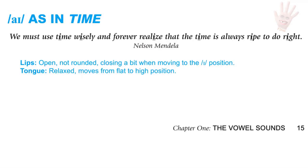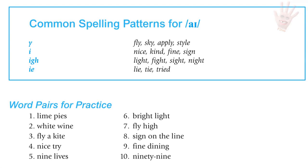I as in time. For the I sound, the lips are open and not rounded, and they close a bit when moving to the I position. The tongue is relaxed, moving from a flat to high position. Common spelling patterns: the letter Y as in fly, sky, apply, style; the letter I as in nice, kind, fine, sign; IGH as in light, fight, sight, night; and IE as in lie, tie, and tried.